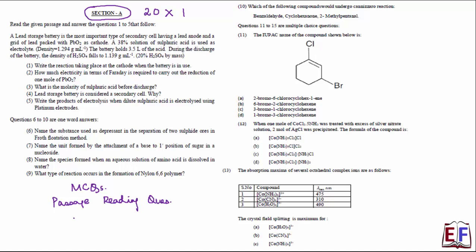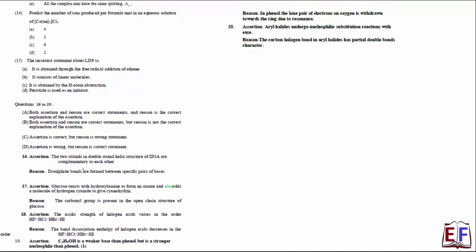Besides that you can expect one word or one liner questions wherein the answer has to be given in one word or one sentence. You can also expect assertion reasoning questions. Now a lot of you might be curious to know what are these assertion reasoning questions. So this is how they look like. If you look at this question number 16 to 20, they are all assertion reasoning questions.